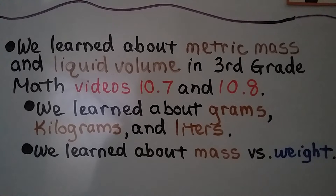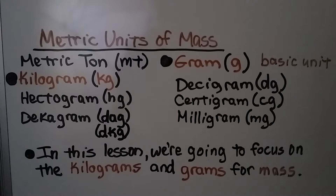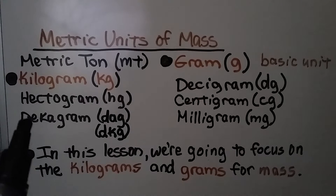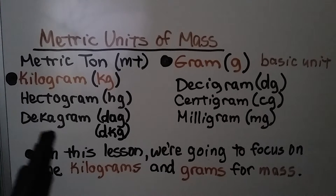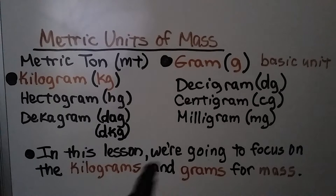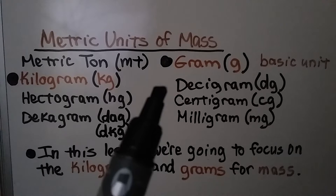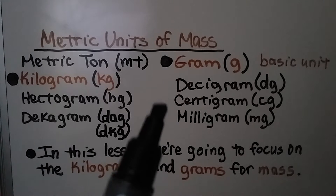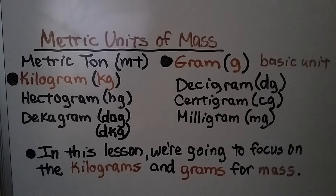We learned about grams, kilograms, and liters, and the difference between mass and weight. The U.S. customary system says weight, while the metric system says mass. Here are some metric units of mass: metric ton, kilogram, hectogram, decagram, gram (the basic unit), decigram, centigram, and milligram. In this lesson, we're going to focus on kilograms and grams for mass.